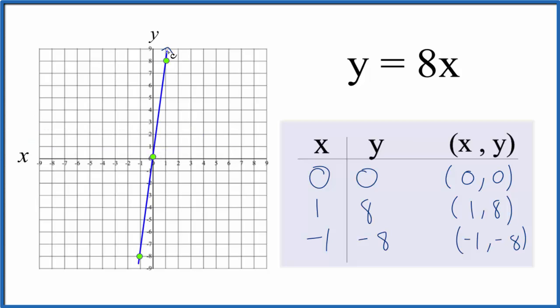Then we'll put arrows to show that that goes to infinity. So that's the line, that's the graph of the line for y equals 8x. Let's check our work with slope-intercept formula.